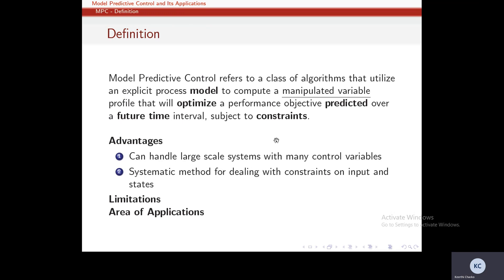The formal definition: model predictive control refers to a class of algorithms that utilize an explicit process model to compute a manipulated variable profile that will optimize a performance objective predicted over a future time interval, subject to constraints. The key terms are prediction, model, optimization, and constraints. MPC uses a model to predict future states, solves an optimization problem to find a control sequence accounting for constraints, and its final output is a sequence of control values — implementing one at each instant before repeating the process.